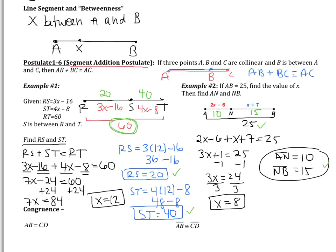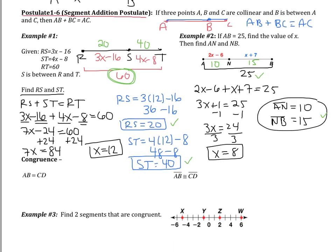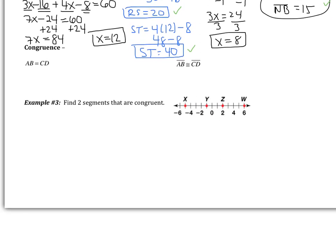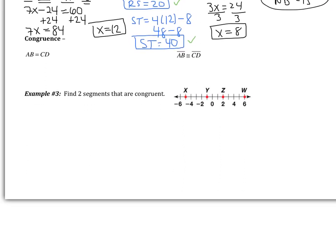That was the first objective, that idea of betweenness. Now we're going to move on to the idea of congruence. Congruence just means that two objects have the same measure. So we're going to look at example 3 and then go back. Example 3 says find two segments that are congruent. So find two segments that are the same length.